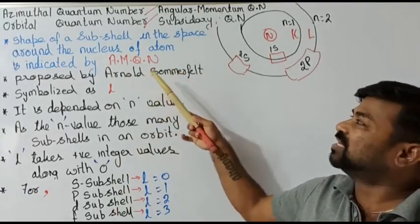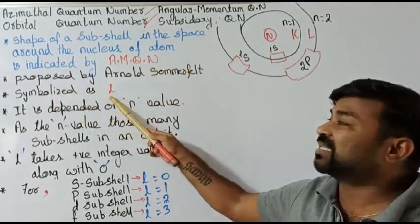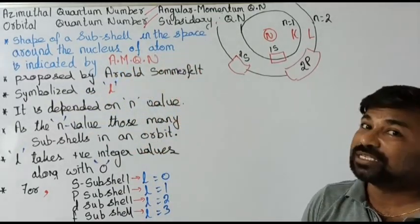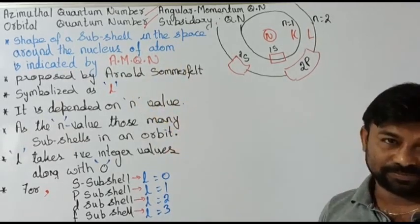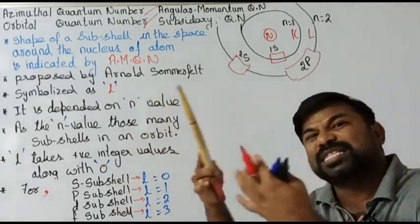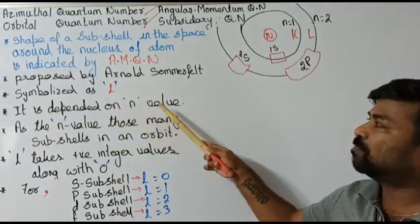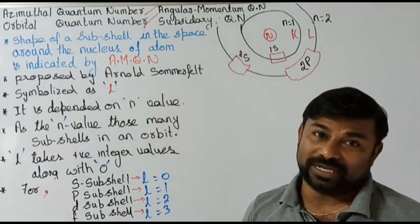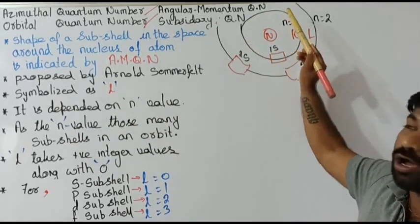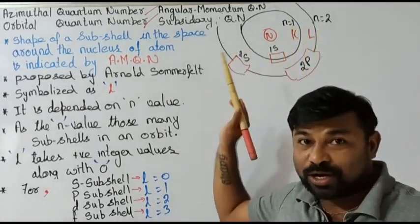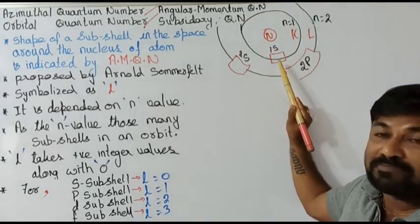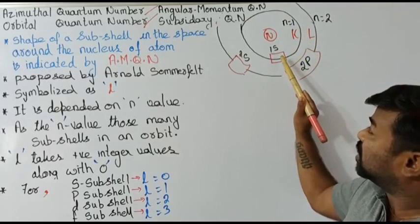What is the symbol of the azimuthal quantum number? It is symbolized as small l. Now, very importantly, this azimuthal quantum number is dependent upon the principal quantum number. If you check the first orbit, the principal quantum number is one, and it has one subshell.